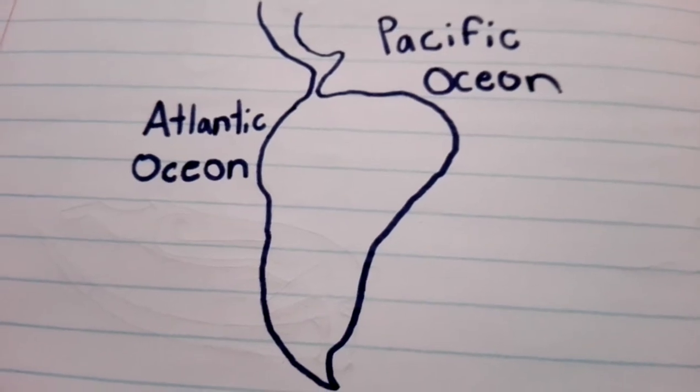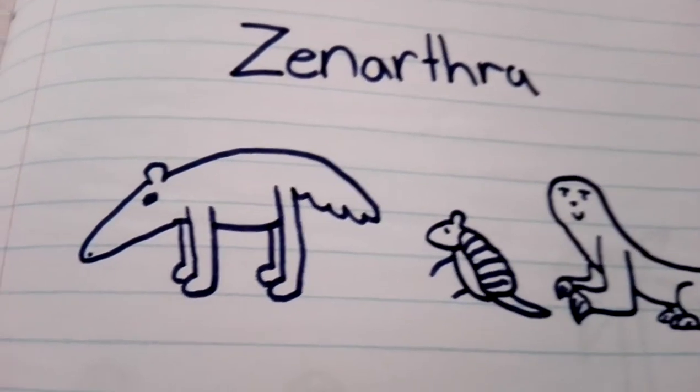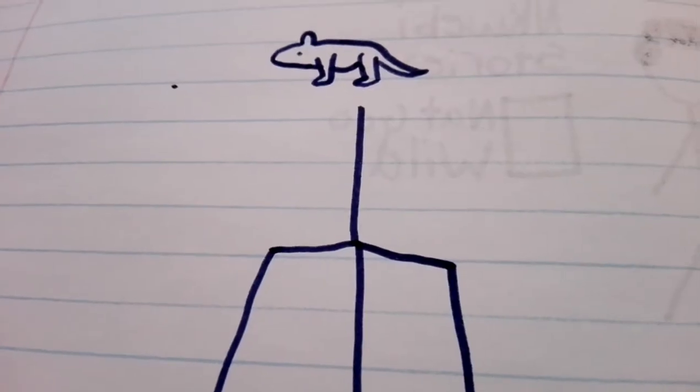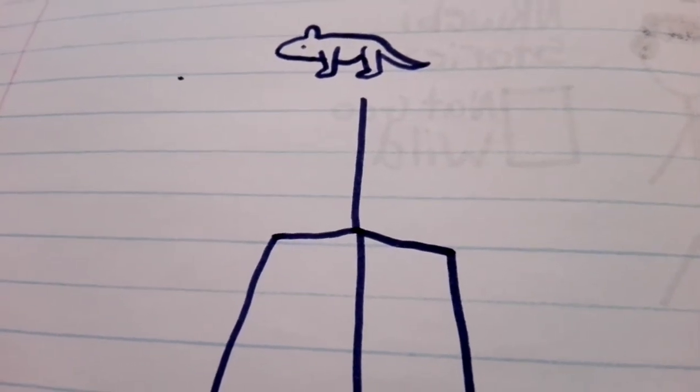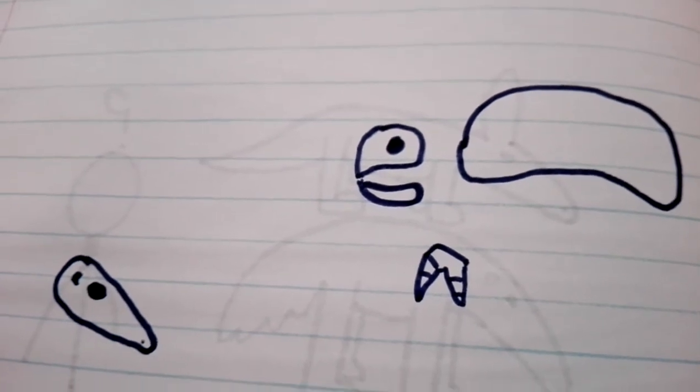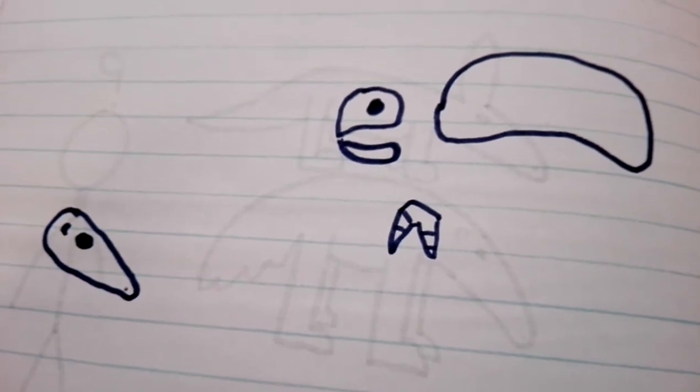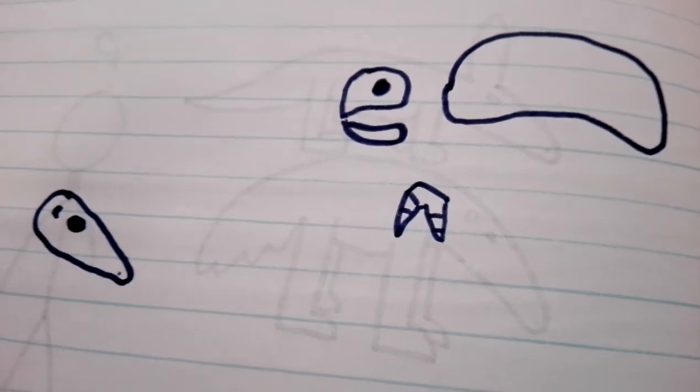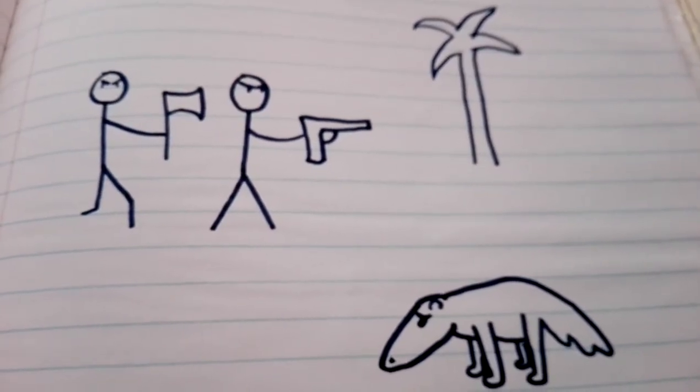For example, anteaters live in South America and belong to the category Xenathra, which includes anteaters, armadillos, and sloths. These animals all shared an ancient ancestor. Over time, there have been thousands of Xenathras, but for some reason most went extinct. Only the anteater, armadillo, and sloth are alive today, and even now anteaters are at risk.